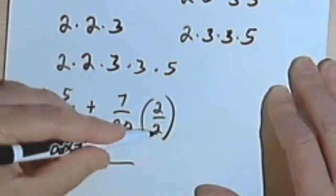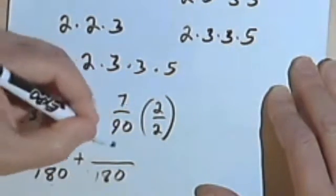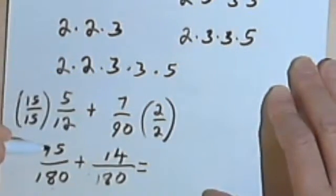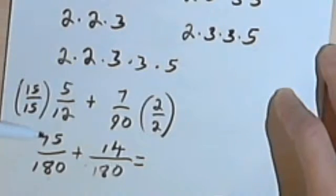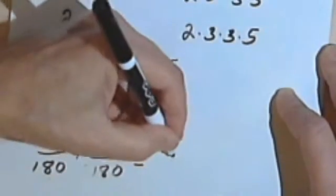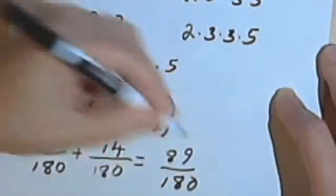Over here I know I have the same denominator, 2 times 90 is 180, and 7 times 2 is 14. Now I add my two numerators together, and I'll get 89 over 180.